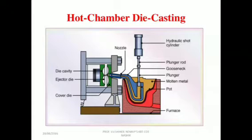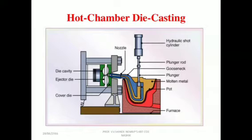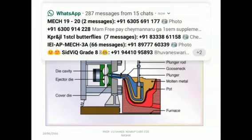The injection mechanism of the hot chamber machine is immersed in the molten metal. The furnace is attached to the machine by a metal feed system called a gooseneck. The nozzle and gooseneck are both attached to each other. The die is closed and the piston rises, allowing molten metal to fill the cylinder. The plunger then seals the port.